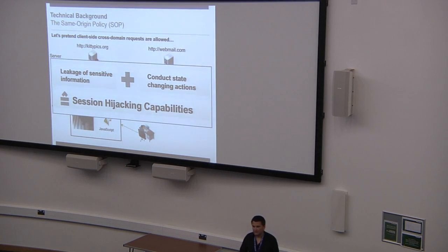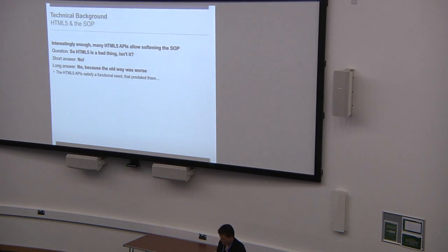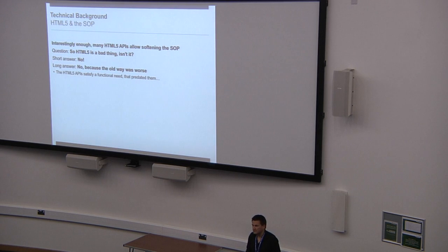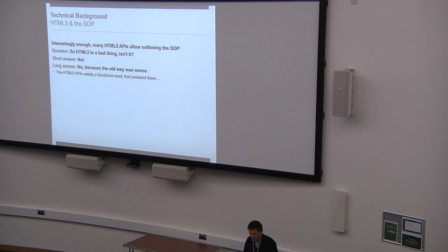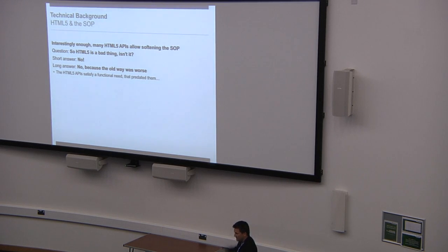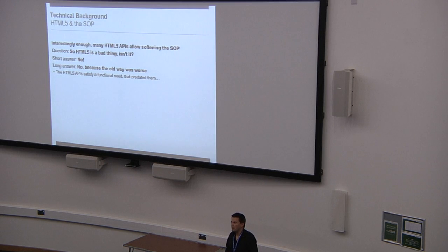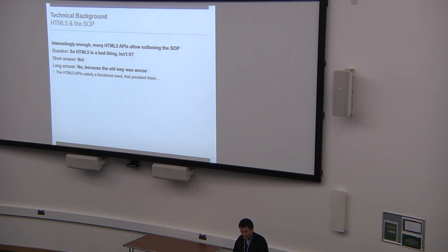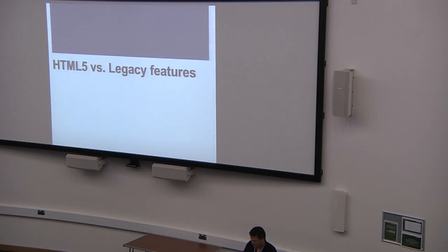Now let's look at HTML5 and its new APIs. If we dig into the specifications, we see that many HTML5 APIs weaken the same origin policy — they create ways to work around it. You might ask: is HTML5 a bad thing? The same origin policy protects against session hijacking, yet HTML5 APIs weaken this protection. The short answer is no, it is not bad. The long answer: no, because the ways developers used before are far worse. We should stick to new APIs with security models created specifically to counter such attacks.